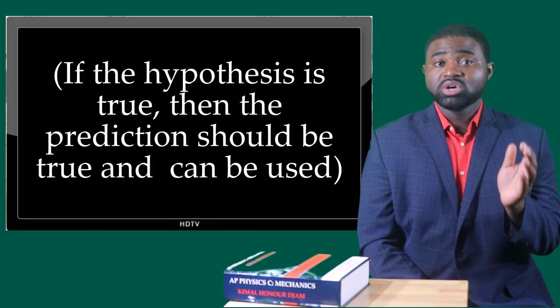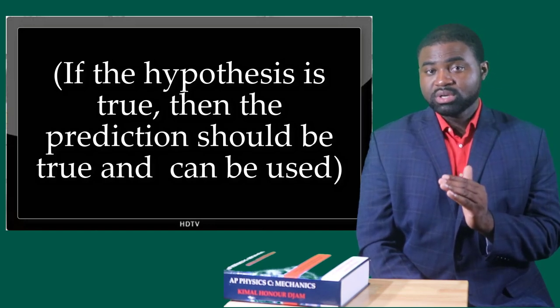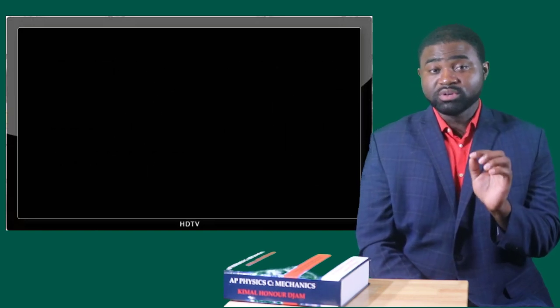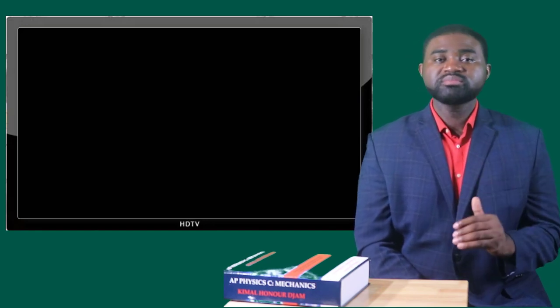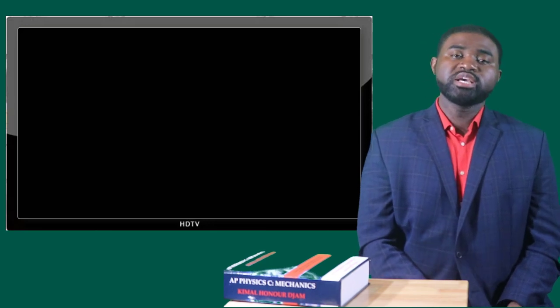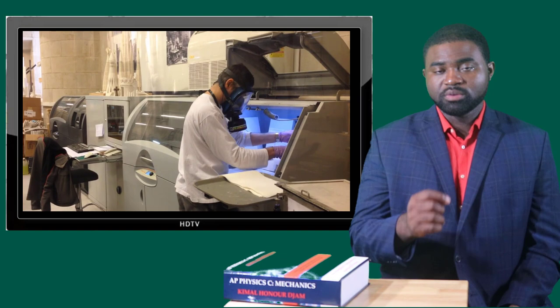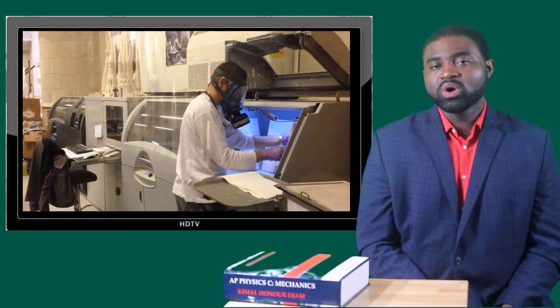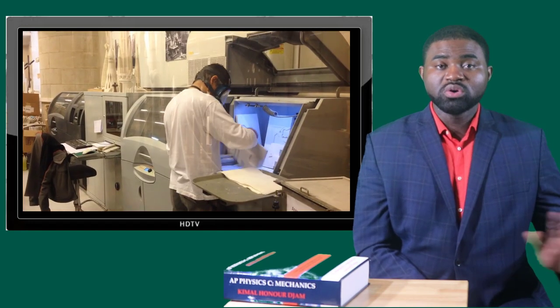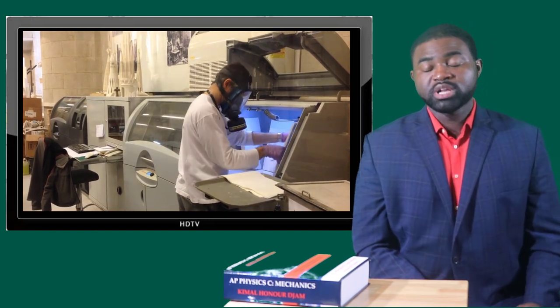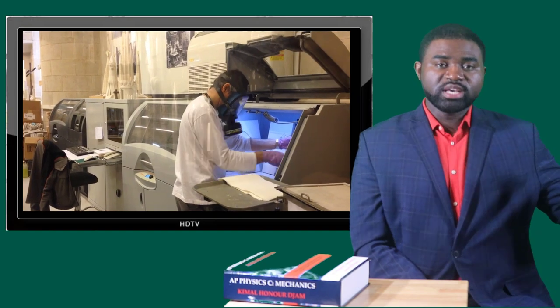And the experiments conducted usually have a control. A control is something to compare the variables to during the experiments. Let me give you an example. Let's say you want to study how yellow light affects crops or corn. One way to set up your control is to plant corn in normal daylight and to plant corn using only yellow light. When you get your yield, you will compare the corn produced under yellow light with the corn produced under normal light. The corn under normal light is our control.